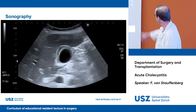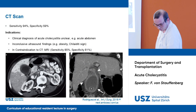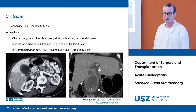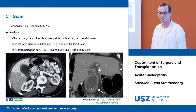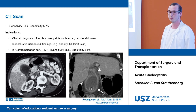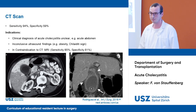CT scan can also be used in the diagnosis of acute cholecystitis with a sensitivity of 94 percent and a specificity of 59 percent. Indications for CT scan include an unclear clinical diagnosis, for example a patient presenting with acute abdomen, or inconclusive ultrasound findings — for example in severely obese patients or patients with Chilaiditi sign, where the gallbladder cannot be seen.